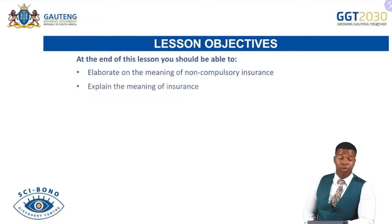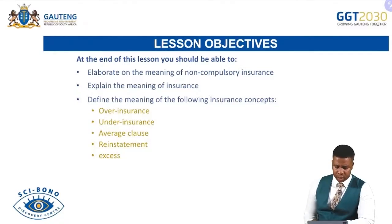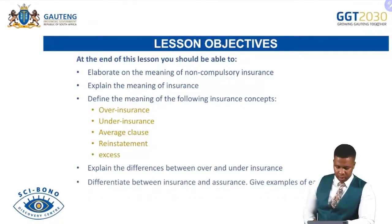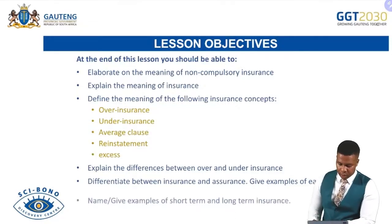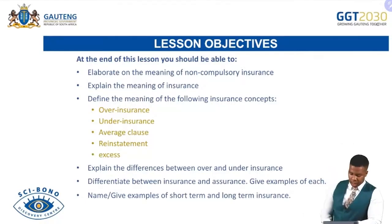We will look into the meaning of insurance — what do we mean by the term insurance. We will define the following insurance concepts: over-insurance, under-insurance, average loss, reinstatement, and excess. Then we will explain the differences between over- and under-insurance, differentiate between insurance and assurance with examples, and give examples of short-term and long-term insurance.